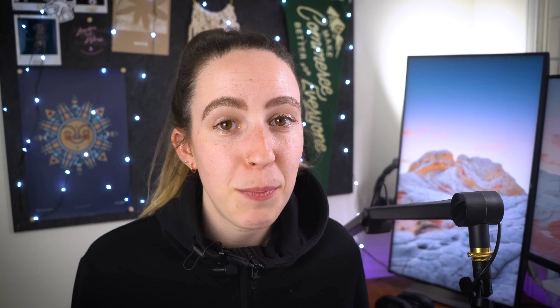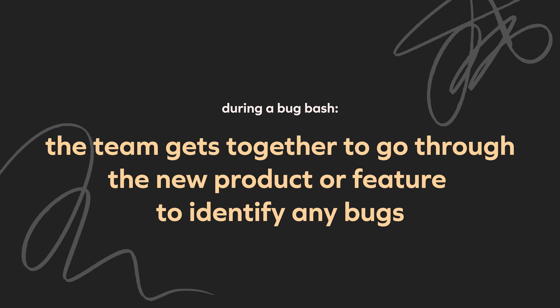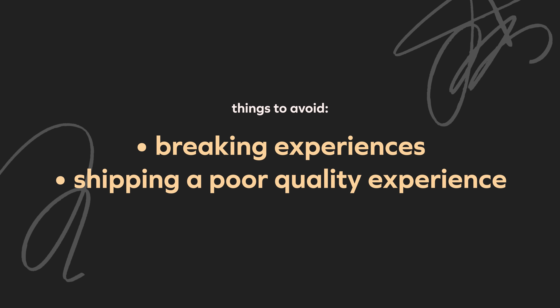Something else that I also like to do is to run a bug bash. A bug bash can be run by either the designer or the engineer, or even better, collaborate and run it together. During the bug bash, the whole team gets together and everyone individually goes through the new product or feature to identify any potential bugs. These bugs could be UI bugs like visual design that's not quite right, or UX bugs where perhaps the flow or experience is breaking or not working as expected. It's really important to stress test the build before you push it to production — you want to avoid a product breaking if it's live or shipping a really poor quality experience.